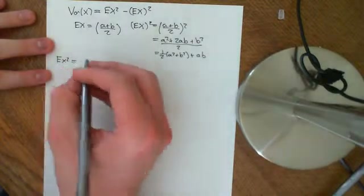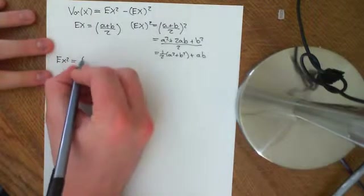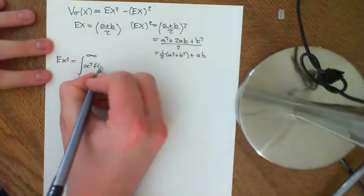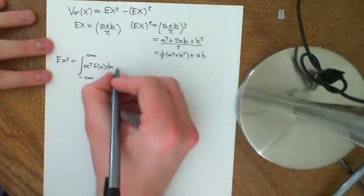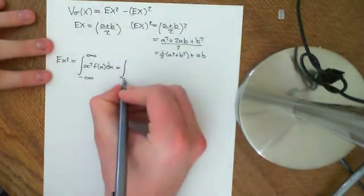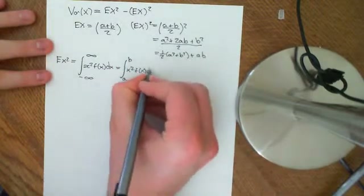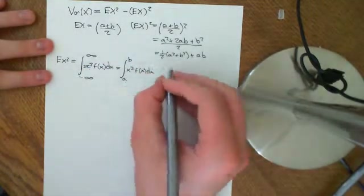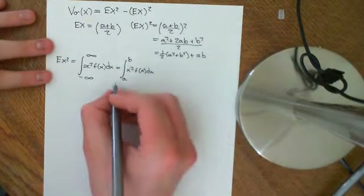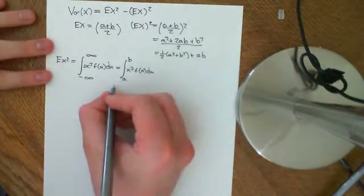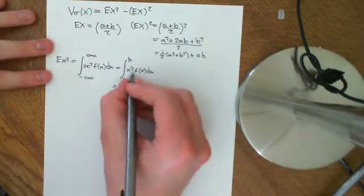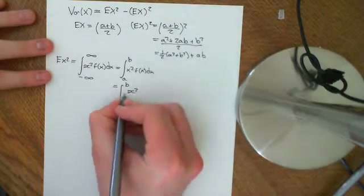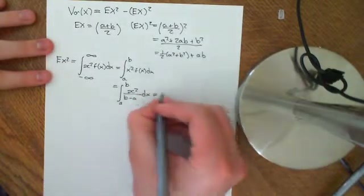To find E[X²], we apply the law of the unconscious statistician: E[X²] = integral from −∞ to ∞ of x² · f(x) dx. For the same reason as before, this equals the integral from A to B of x² · f(x) dx, since f(x) = 0 outside [A, B]. Substituting f(x) = 1/(B − A), we get the integral from A to B of x²/(B − A) dx.